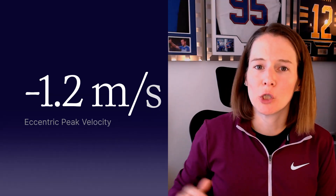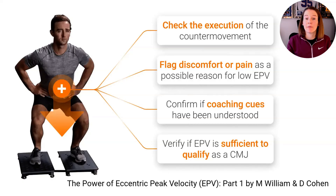They have identified a threshold of minus 1.2 meters per second. If an individual's eccentric peak velocity is slower than that — which confusingly, because it's negative, means a number closer to zero, between zero and minus 1.2 — that suggests they haven't hit a sufficient peak velocity in the eccentric phase. That could show they did not go down with enough intent, meaning we're probably not using the stretch shortening cycle and it's not really a counter movement jump. It might be a technique or familiarization issue, or in a consistent athlete, a flag for fatigue.